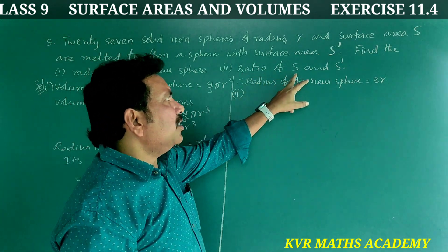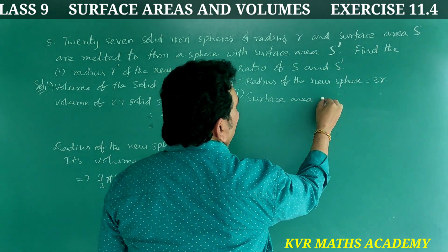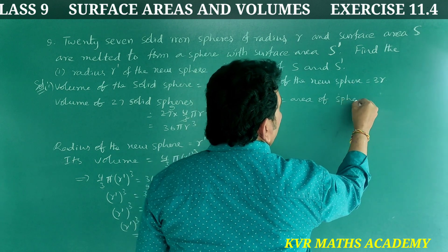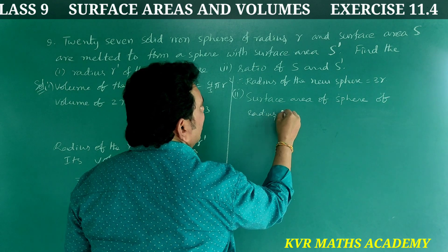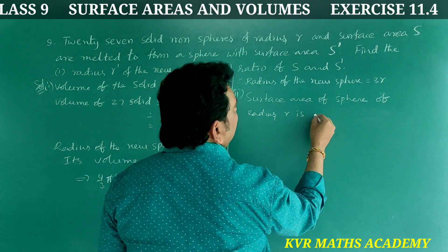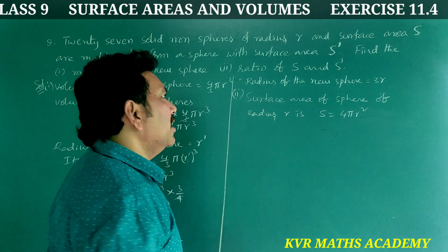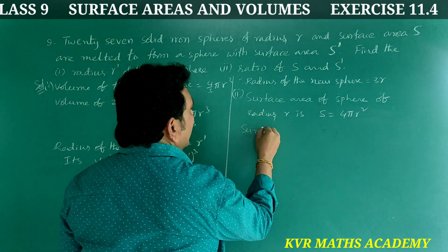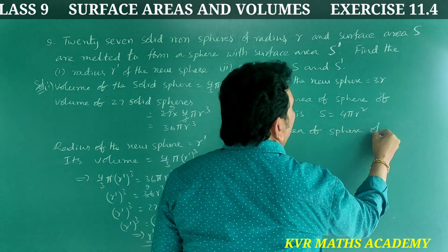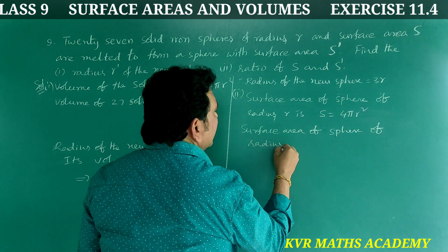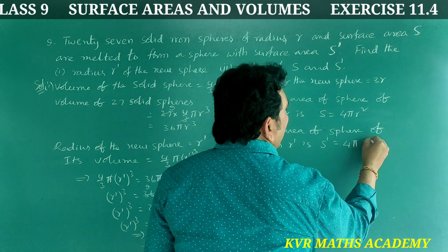Second part: find the ratio of s and s dash. Surface area of sphere of radius r is s equals 4 pi r square. Surface area of sphere of radius r dash is s dash equals 4 pi r dash square.